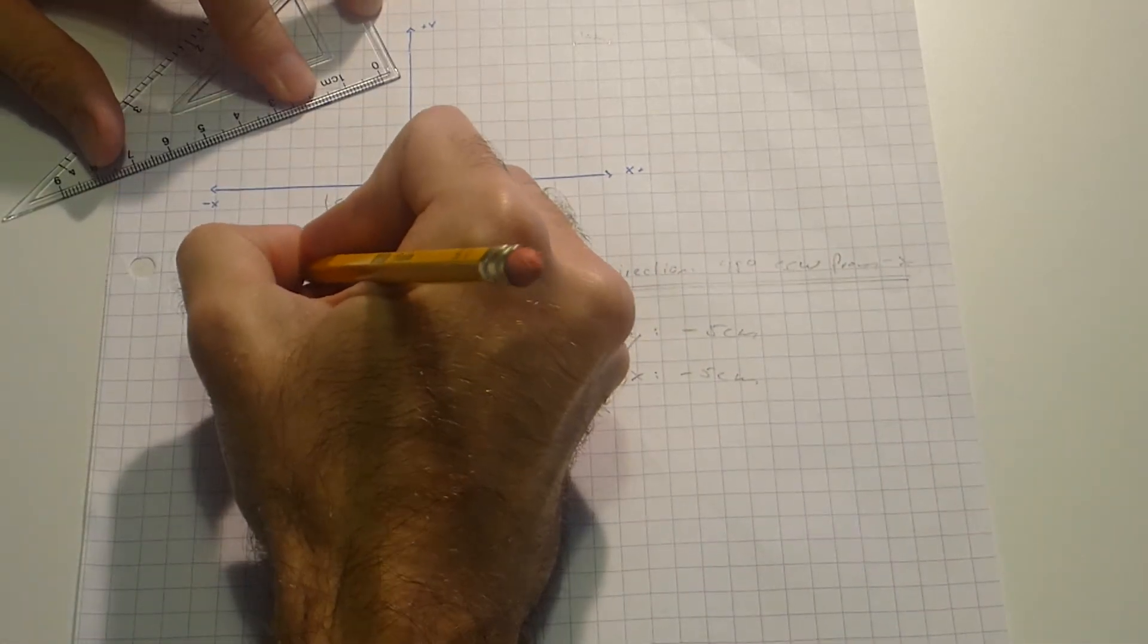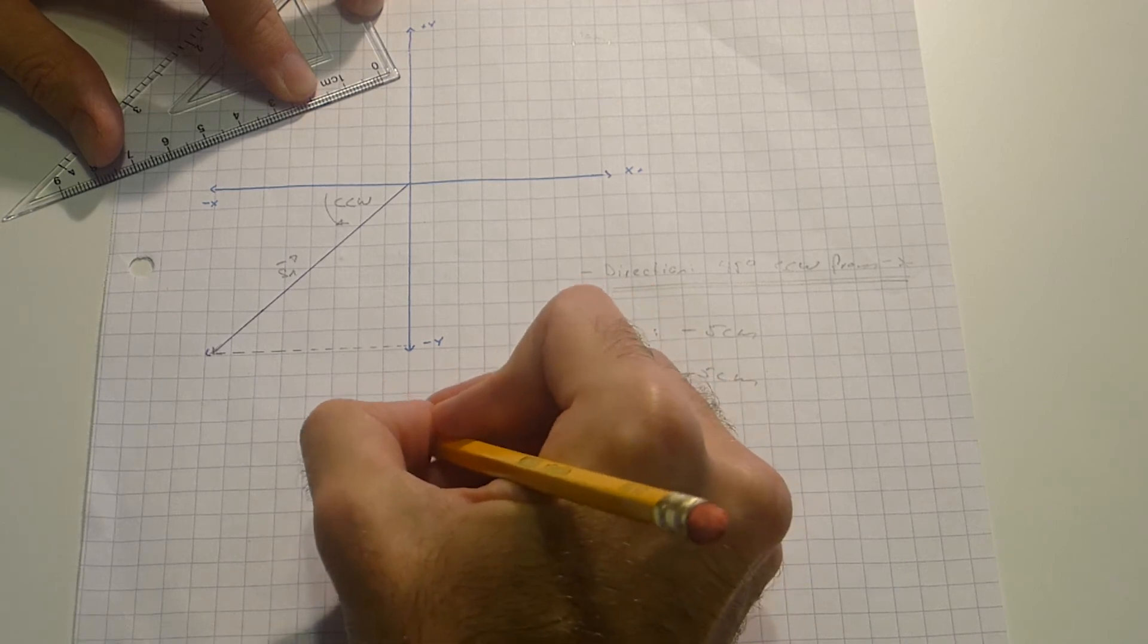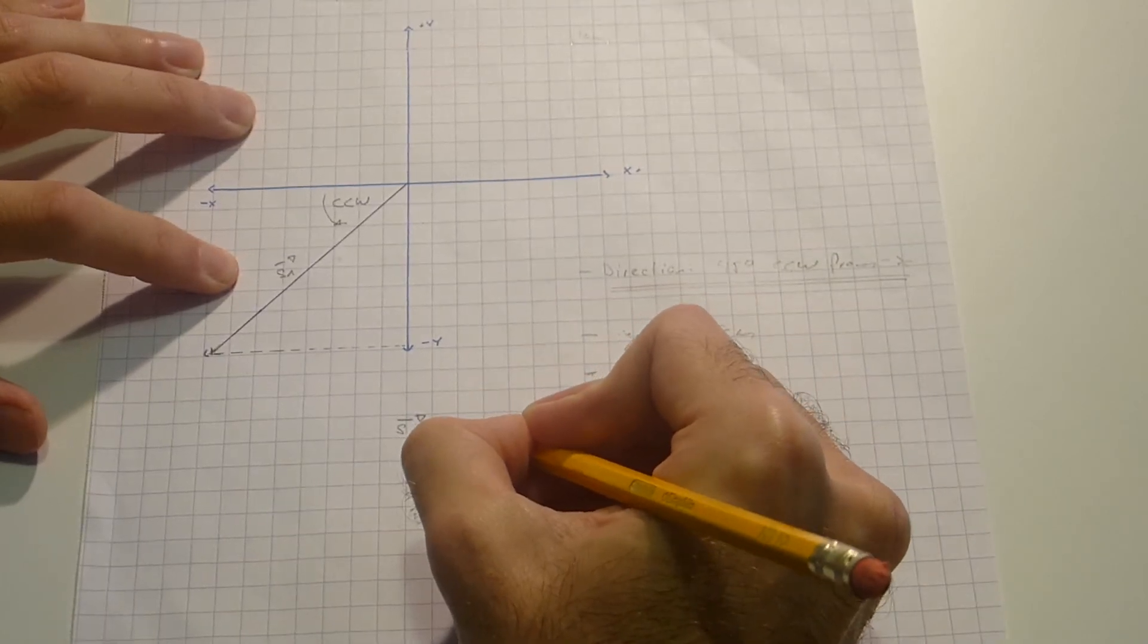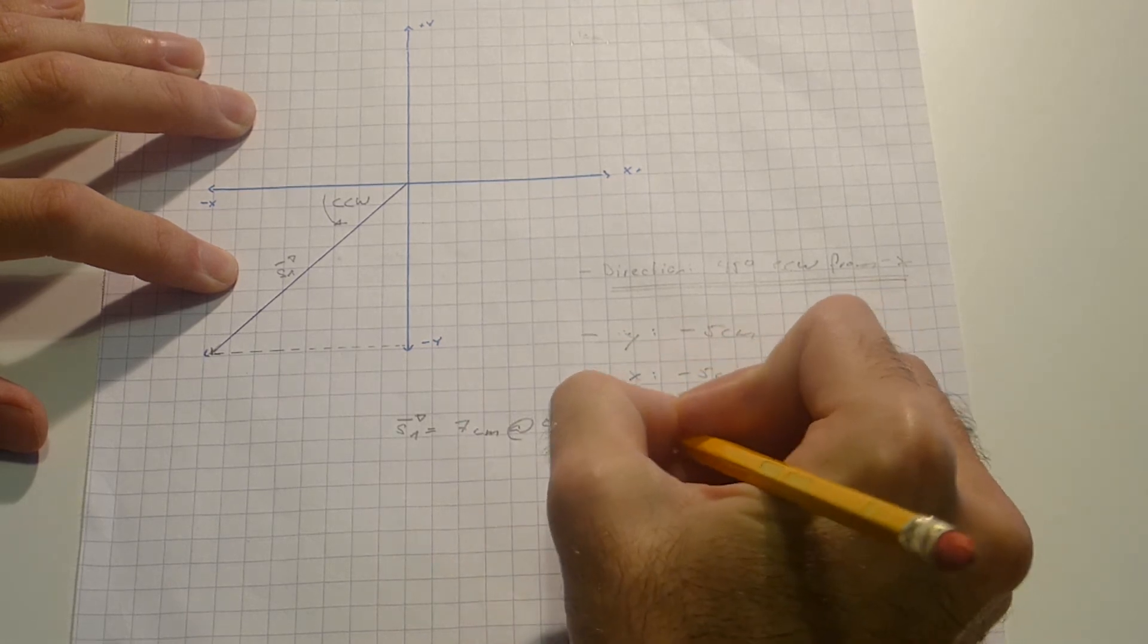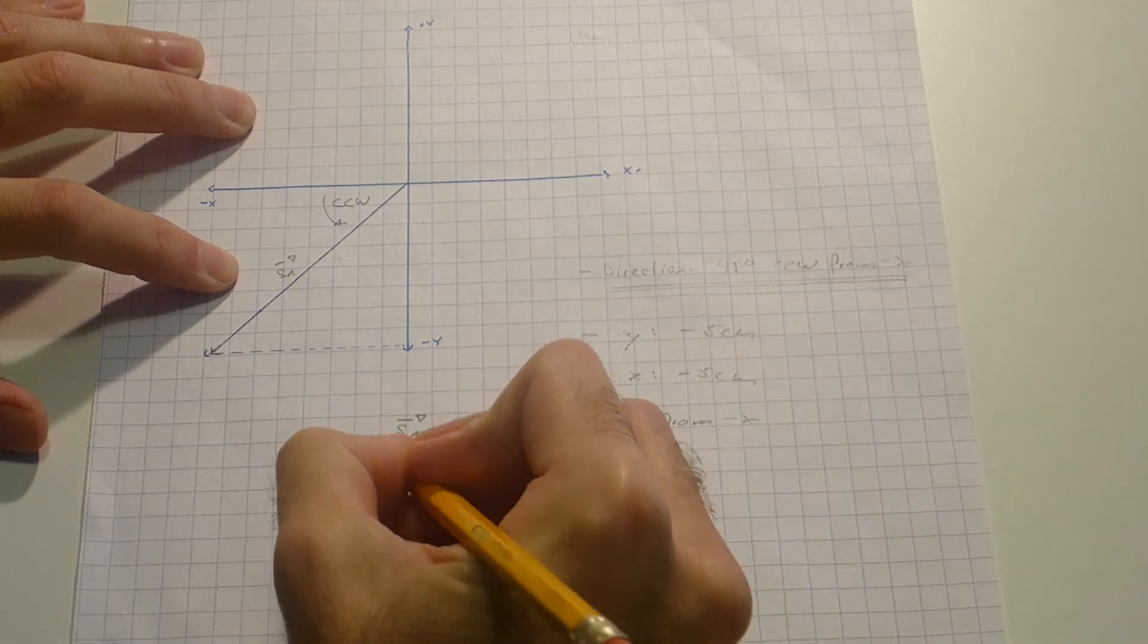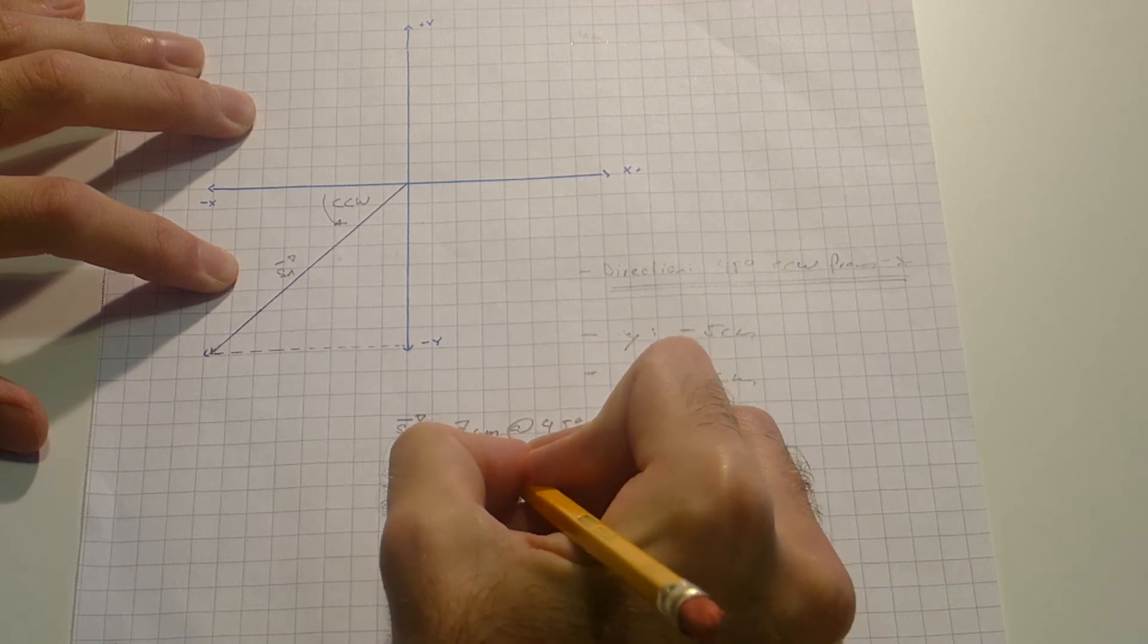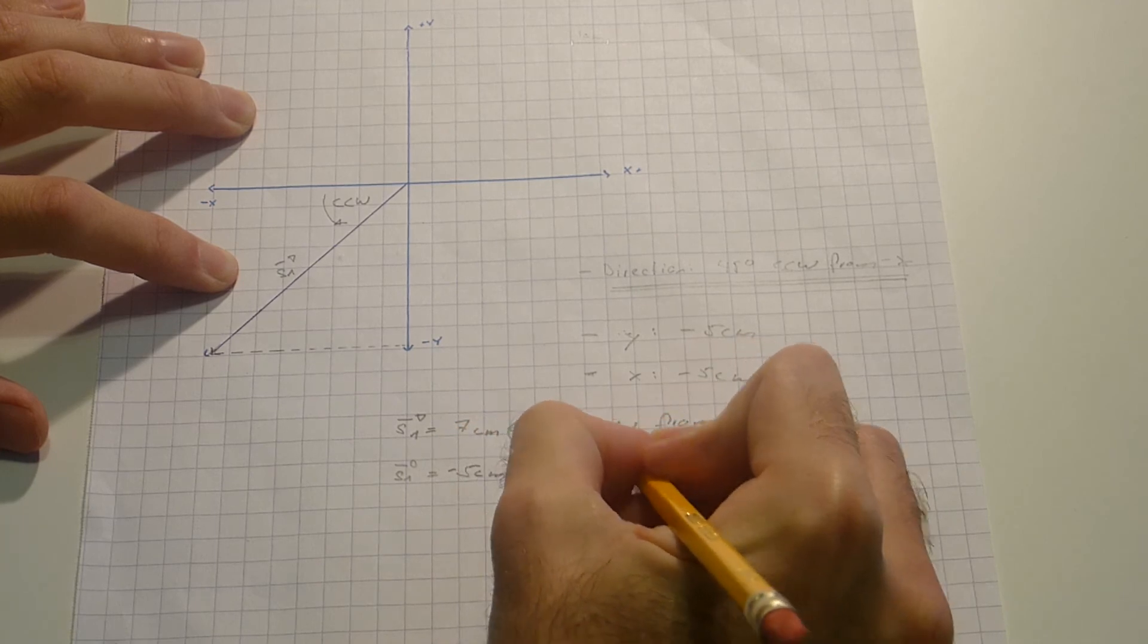So if I will give this one a name, let's say S1, I could say either S1 is equal to 7 centimeters at 45 degrees counter-clockwise from minus x or S1 is equal to minus 5 centimeters i minus 5 centimeters j.